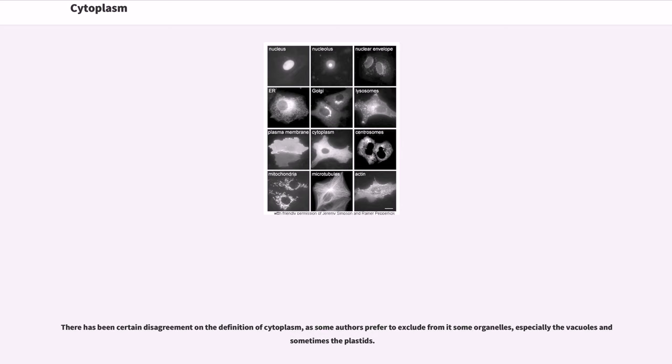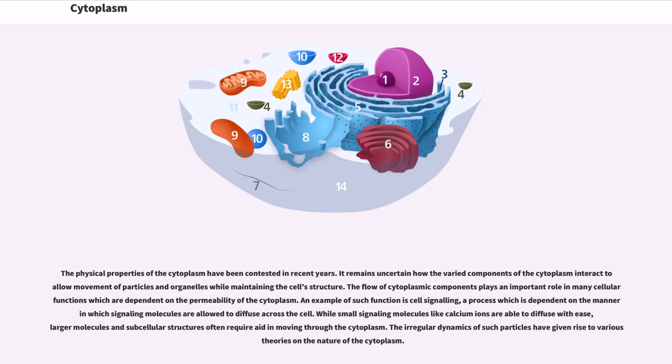There has been certain disagreement on the definition of cytoplasm, as some authors prefer to exclude from it some organelles, especially the vacuoles and sometimes the plastids. The physical properties of the cytoplasm have been contested in recent years. It remains uncertain how the varied components of the cytoplasm interact to allow movement of particles and organelles while maintaining the cell structure.